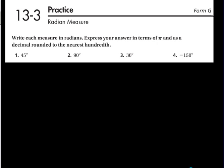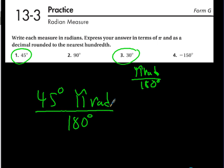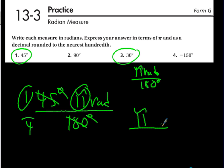Now the reteaching worksheet is done. I'll do the odd homework questions — numbers 1, 3, 5, and 7. Number 1: 45 degrees times pi radians over 180. Degrees cancel; 45 over 180 simplifies — 45 goes into 180 four times — giving 1 over 4. So the answer is π/4 radians.